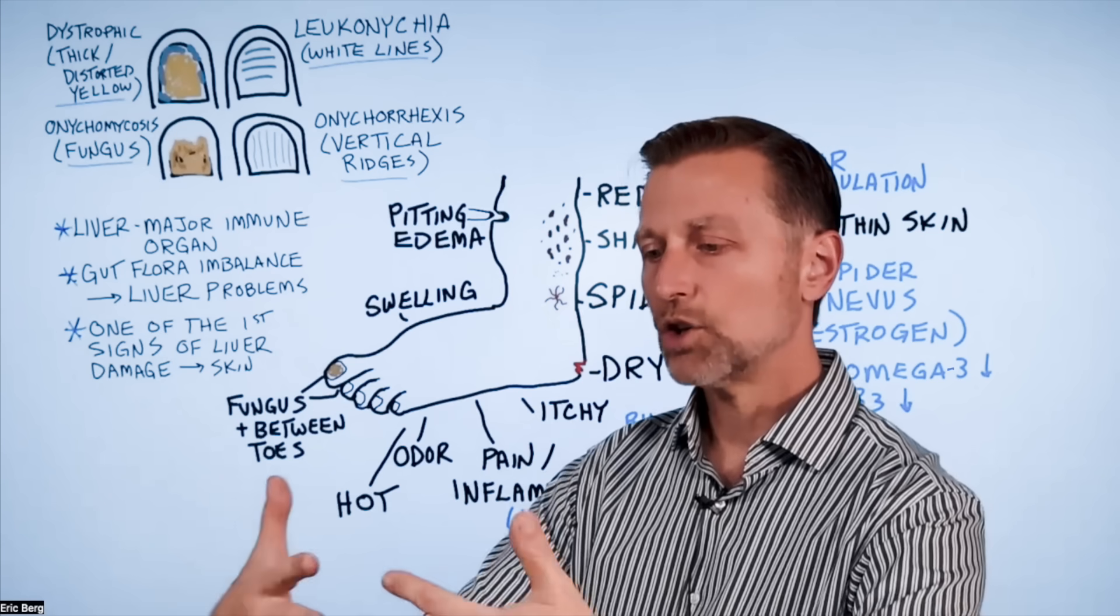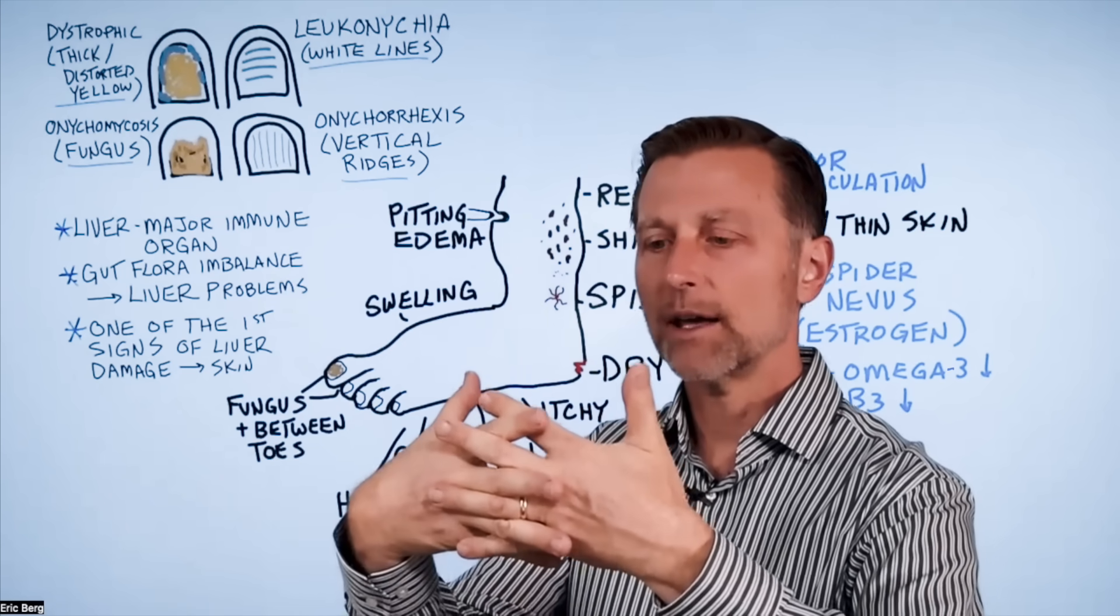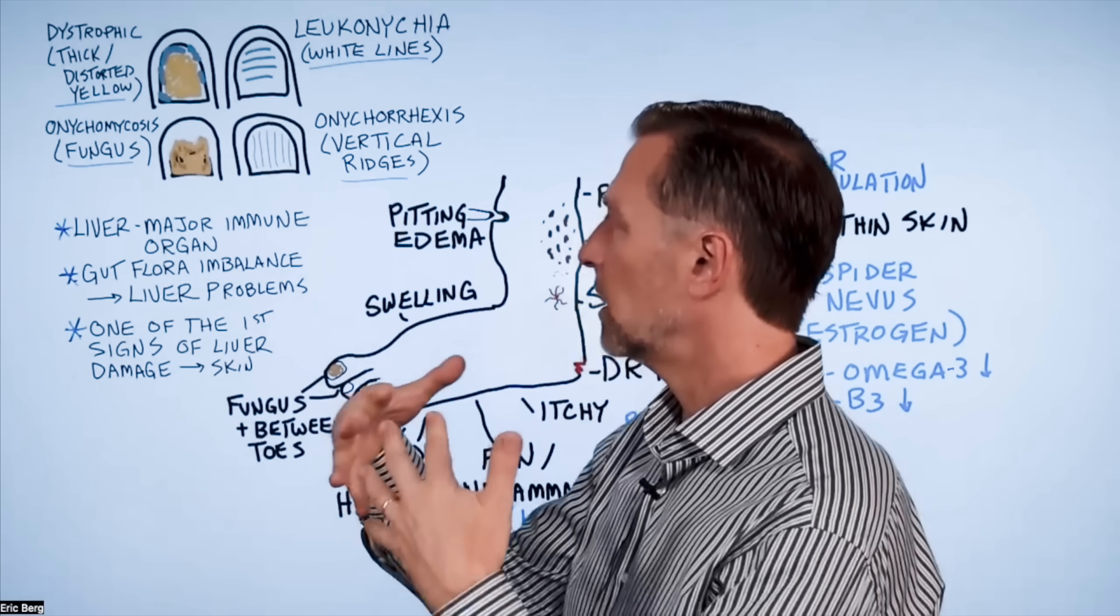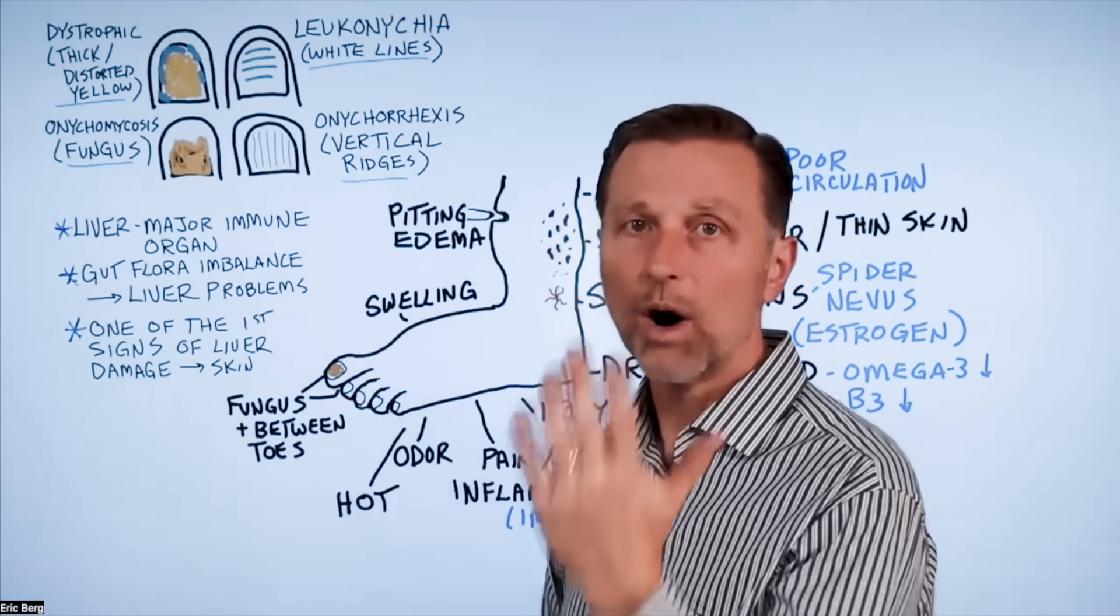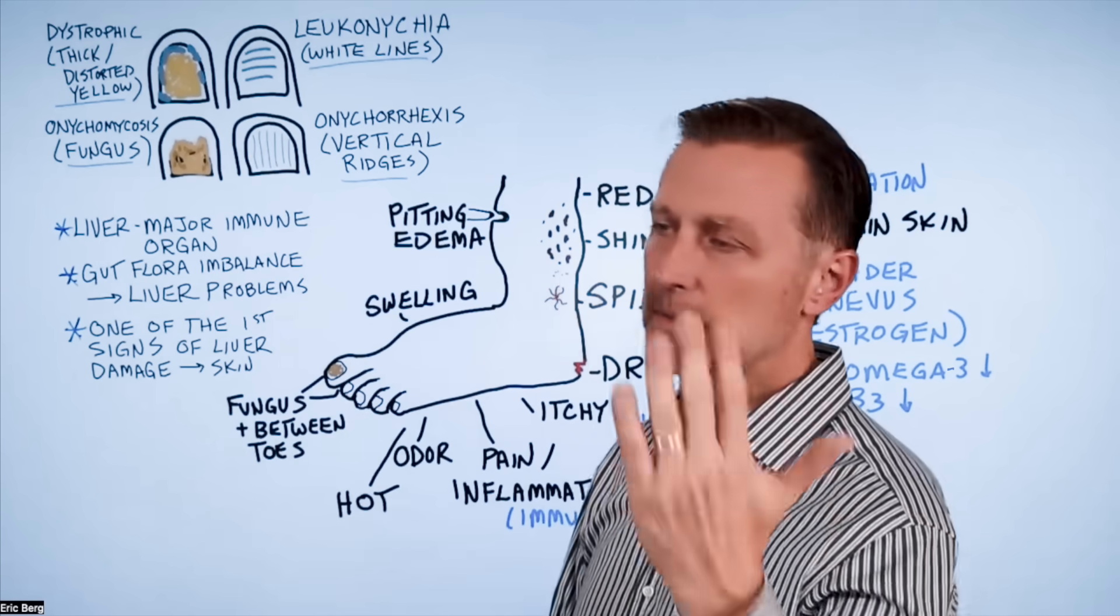There's this huge gut-liver axis. It's a two-way street situation where the gut and the liver are under constant communication. So one problem can create another, and then the liver problem can create problems with your gut.